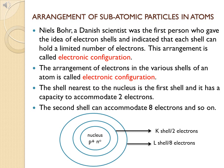The shell nearest to the nucleus is the first shell, represented by the letter K, or called the first shell or shell 1. This first shell has the capacity to hold only two electrons, and it must be completely filled with two electrons first.